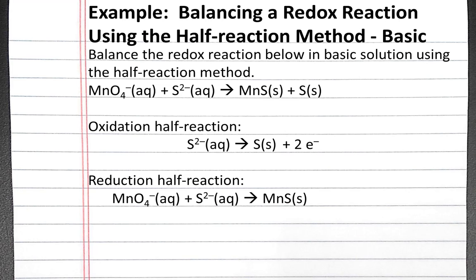For the reduction half-reaction, our masses are not balanced, so we'll start by balancing mass. The first step is to balance the non-oxygen and hydrogen elements. Manganese and sulfur are both balanced already. The second step is to balance oxygen by adding water. We have 4 oxygens on the left currently and 0 on the right, so we'll add 4 waters to the right. The next step is to balance hydrogen by adding H+. We have 8 hydrogens on the right, so we can add 8 hydrogens to the left.